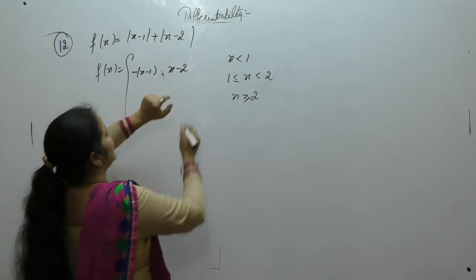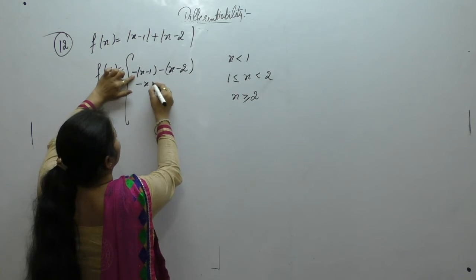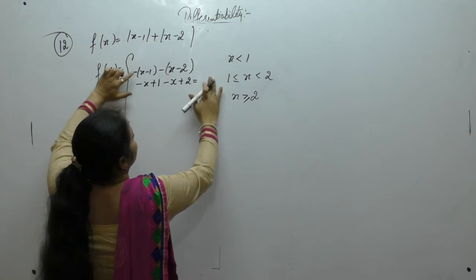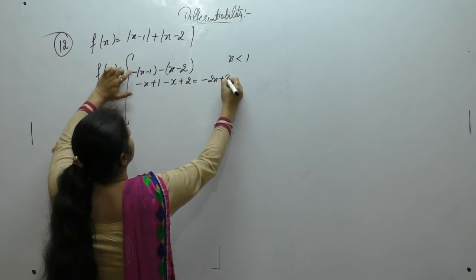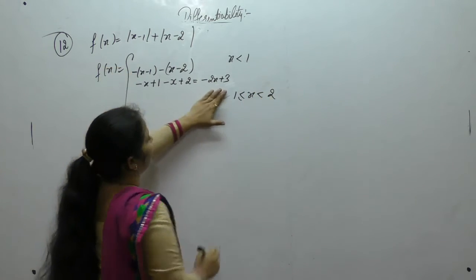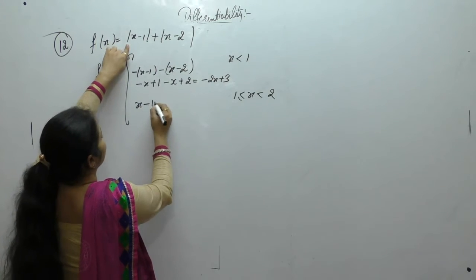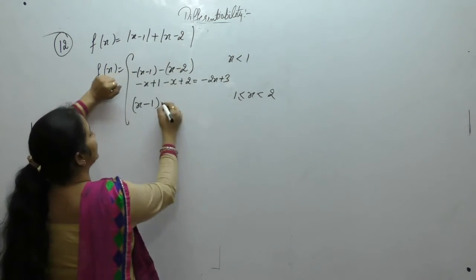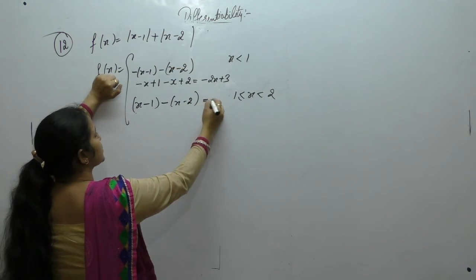Because when x is less than 1, then it will also be less than 2. So we get the value as minus(x−1) minus(x−2), giving minus 2x plus 3. Now when 1 ≤ x < 2, x is greater than or equal to 1 so the first modulus is positive, but less than 2 so the second modulus is negative. So x cancels and we get 1.